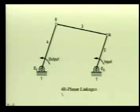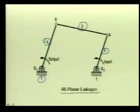This is called a 4R planar linkage. Here we have four rigid bodies namely 1, 2, 3 and 4 which are connected by four revolute pairs at O2, A, B and O4.